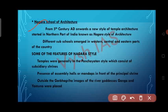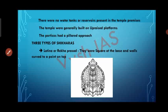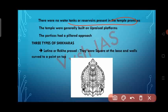The Nagara school of architecture emerged during the 5th century AD in the northern part of India, with sub-schools in the western, central and eastern parts of the country. Features of the Nagara style include: temples generally in the Panchayatan style with subsidiary shrines; presence of assembly halls or Mandapas in front of the principal shrine; images of river goddesses Ganga and Yamuna placed outside the Garbagriha; no water reservoir within the temple premises; temples built on an uprised platform; and porticos with a pillared approach.